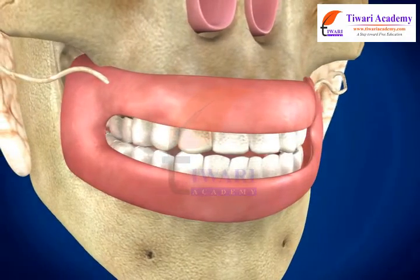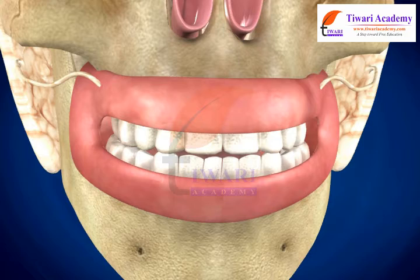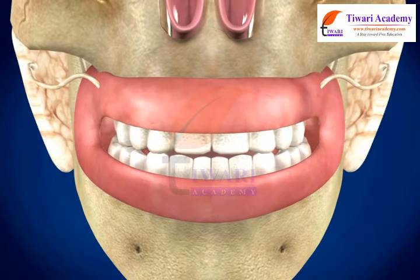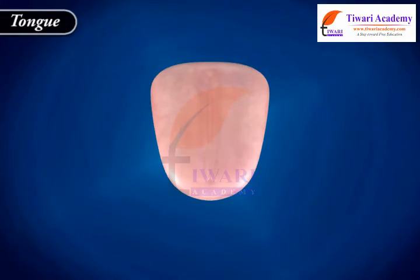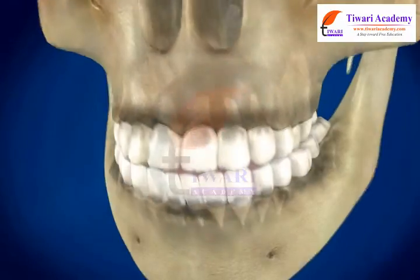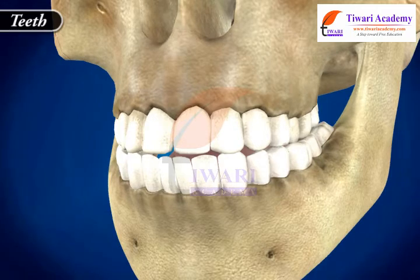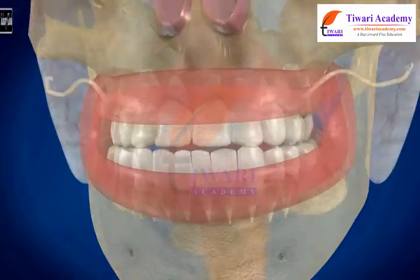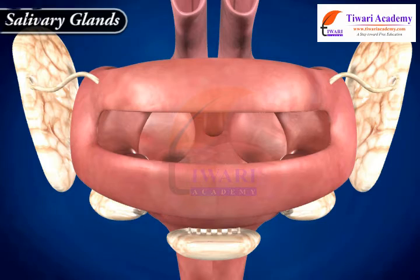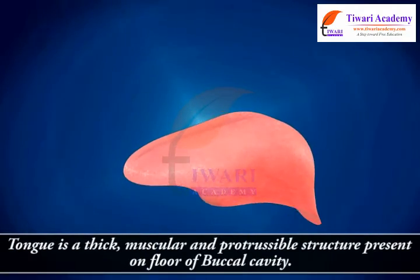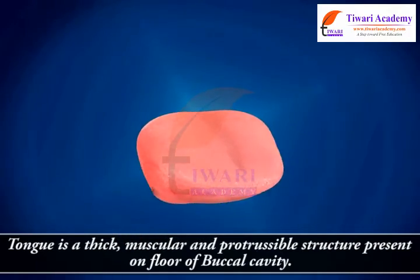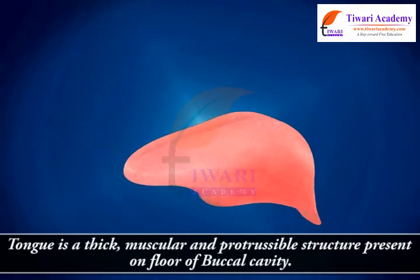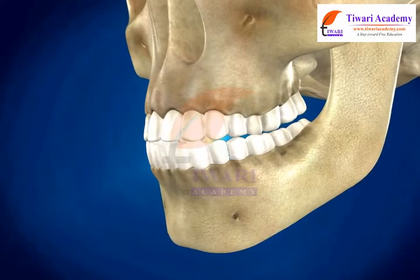The buccal cavity is the second organ of the human digestive system. The buccal cavity has two main structures: tongue, teeth, and salivary glands. The tongue is a thick, muscular, and protrusible structure present on the floor of the buccal cavity.